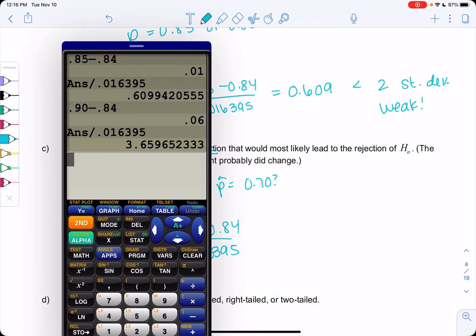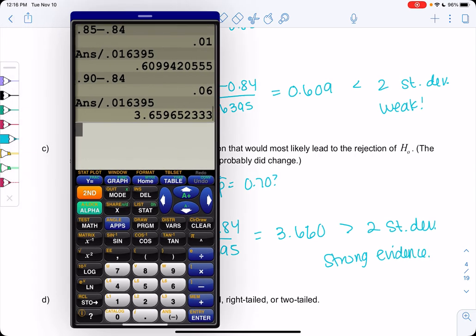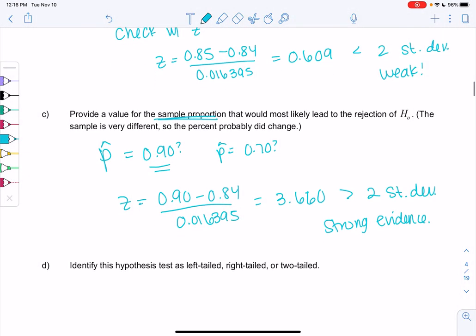And we get a z-score of, yeah, 3.60. Because 5.9 will go up to 6.0. And it's way more than two standard deviations. So we would call this strong evidence. It's probably not random anymore. It probably is different.